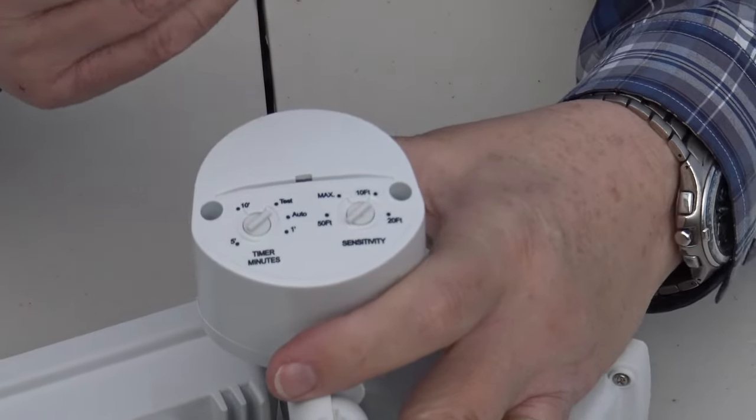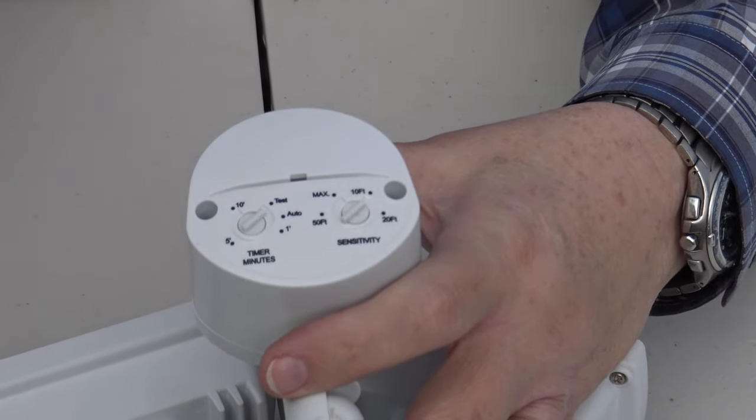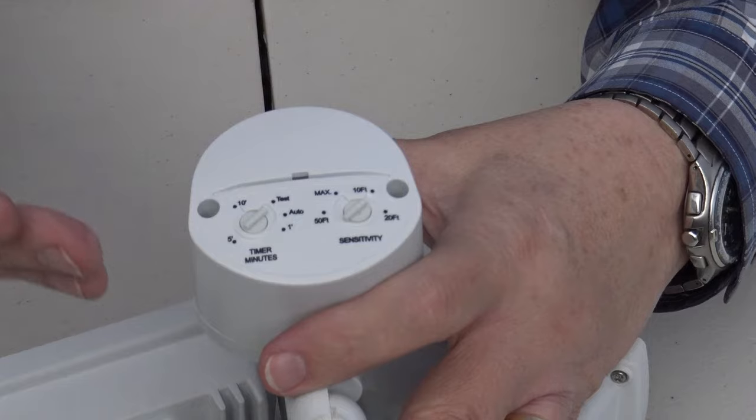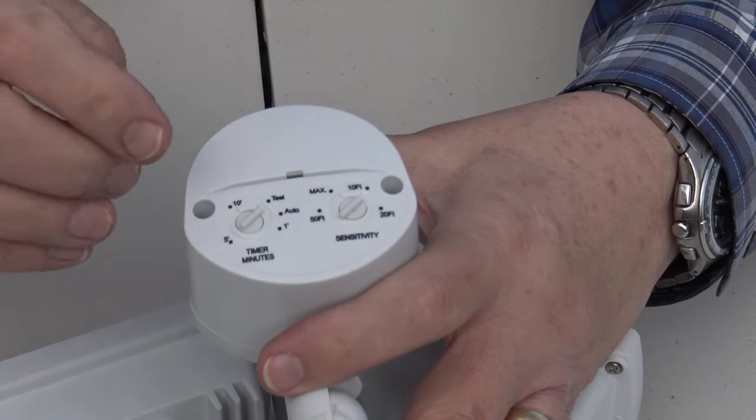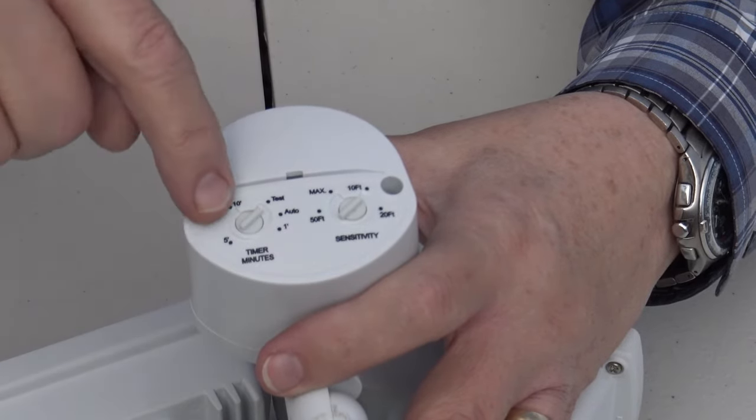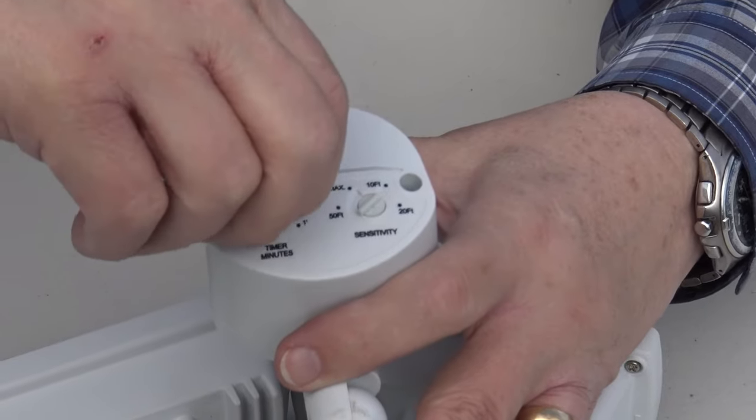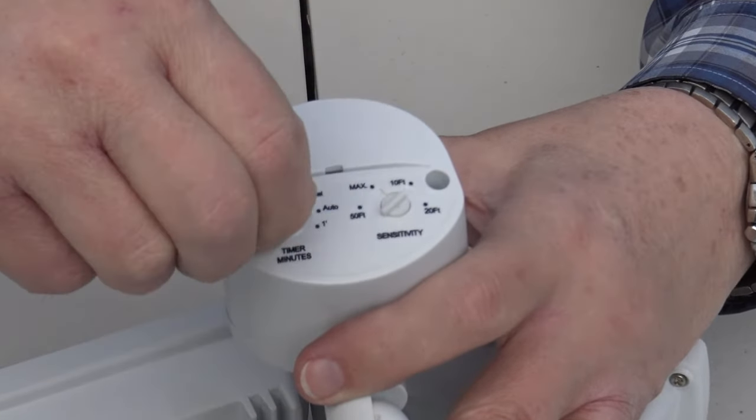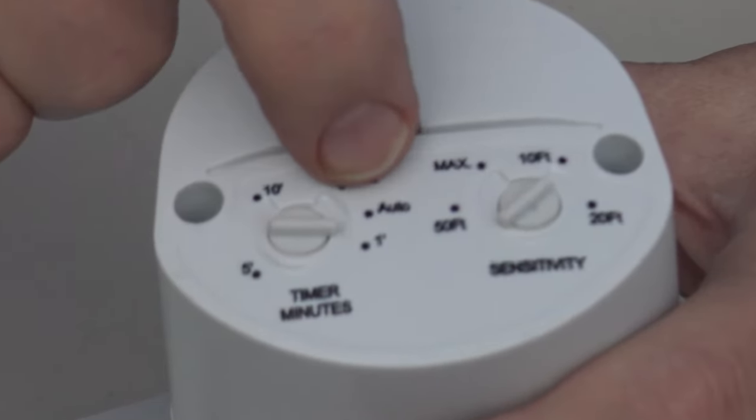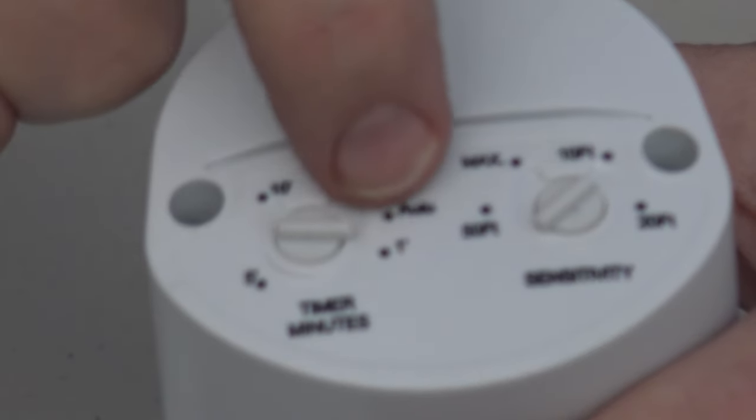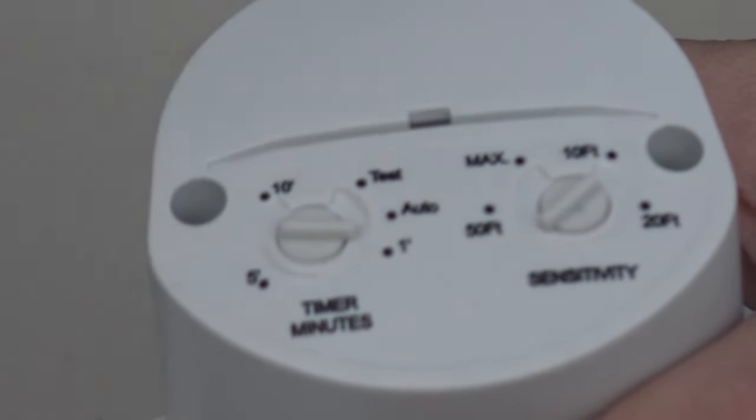Once you've got the setting and you've crossed in front of it where you feel that distance is appropriate for your particular installation, then what you want to do is rotate this minutes knob out of test mode, rotate it past auto. Do not leave it set on auto because the auto is your demarcation line.